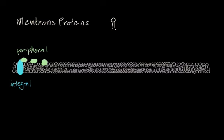Peripheral proteins attach and remove themselves from the cell membrane or from other proteins. They're generally there for different cell processes. For example, a hormone might be a peripheral protein — it attaches to the cell, makes the cell do something, and then leaves. Peripheral proteins can also exist inside the cell on the cell membrane.